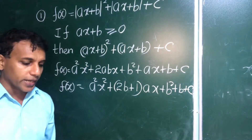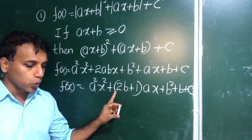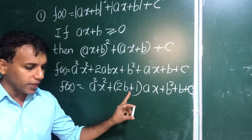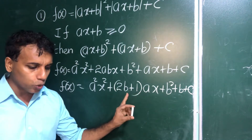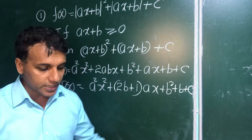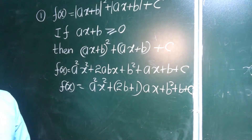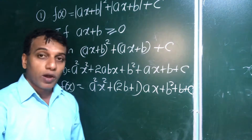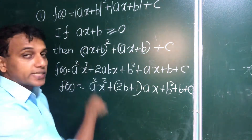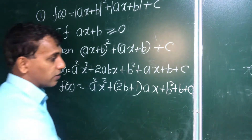The first quadratic equation is: a squared x squared plus (2b + 1)·a·x plus b squared plus b plus c equals zero. This is valid when ax plus b is greater than or equal to zero, and has real roots when the discriminant delta is greater than or equal to zero.